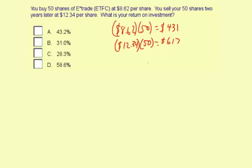Okay, so now we need to figure out how much money was actually made. That's going to be $617 minus the $431 that was originally invested. And you take that amount and divide it by the amount you originally invested. And that will tell you what your return on investment was.